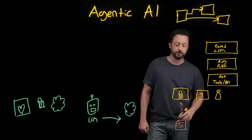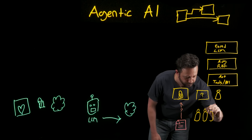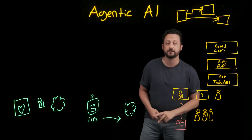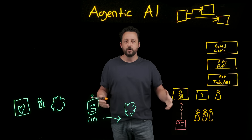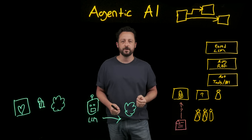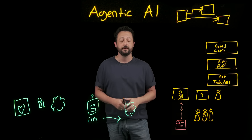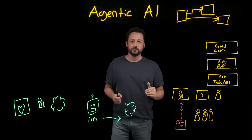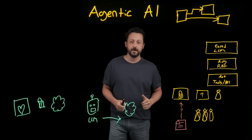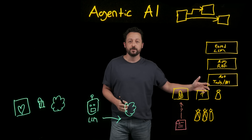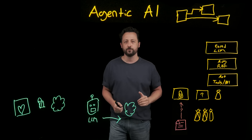Second, access control. Implement strong access controls — not every single person needs to touch your system. Log every prompt, every interaction, every query, every retrieval. This will create compliance trails and ensure only those who absolutely need to touch the data can touch the data. And finally, data minimization. Only give your agents access to the minimum data they need for their specific tasks. Don't give your appointment scheduling agent access to full medical histories when it only needs the patient's name and availability.